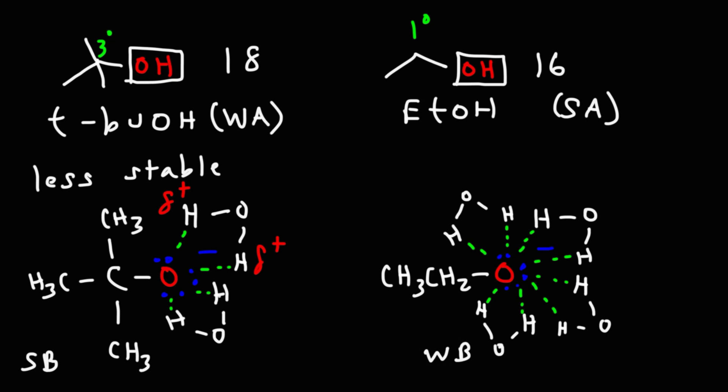Tert-butoxide because it's bulky and sterically hindered, that bulkiness doesn't allow as much solvent interaction. So you have less water molecules stabilizing the negative charge and that makes this base stronger.